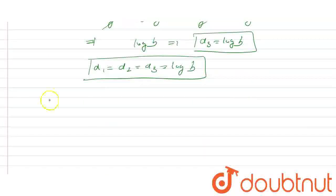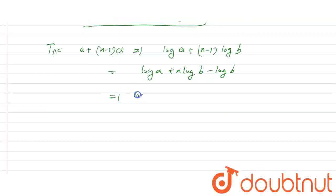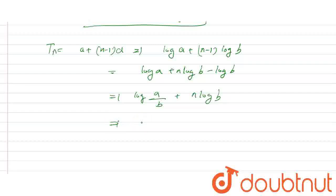Now we find the nth term. The nth term Tn = a + (n−1)·d, so this is log(a) + (n−1)·log(b). Expanding, this is log(a) + n·log(b) − log(b). Using log(m) − log(n) = log(m/n), this becomes log(a/b) + n·log(b). Using n·log(b) = log(b^n), this is log(a/b) + log(b^n).